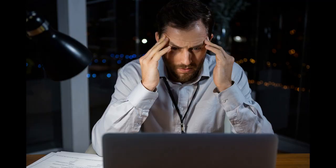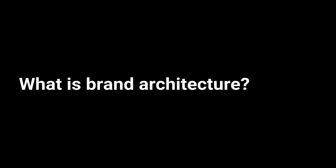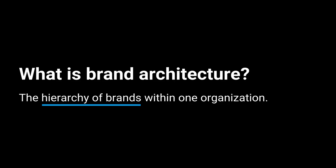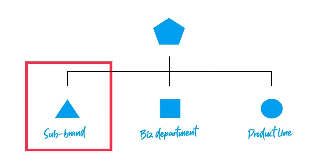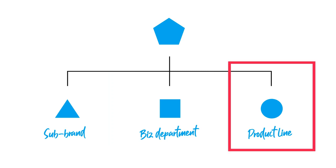As your brand grows, branding might get quite complicated, because if you sell a number of different products or offer various services, then they all need to be structured in some kind of a way. So what is brand architecture? Brand architecture simply refers to the hierarchy of brands within one organization, and the goal of developing one is to bring order into chaos — it's just a way of organizing numerous sub-brands, business departments, or product lines within one company.